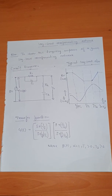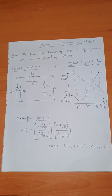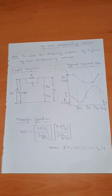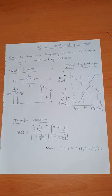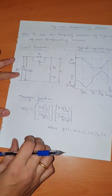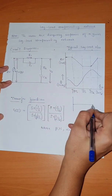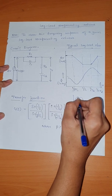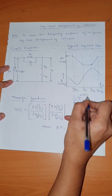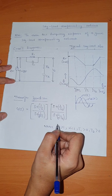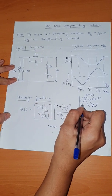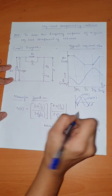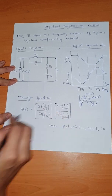We have different types of compensators: lag compensator and lead compensator. A lag compensator is basically when you apply a sinusoidal input to the system, you will obtain a sinusoidal output. The input and output will have some lag — that is, the output will be lagging behind the input with a phase angle phi. This is what we call a lag compensating network.